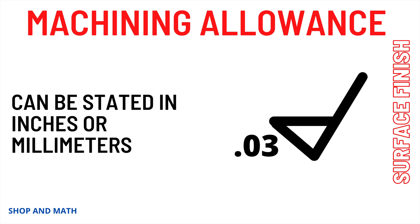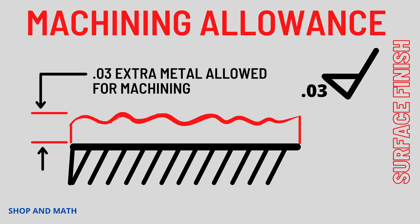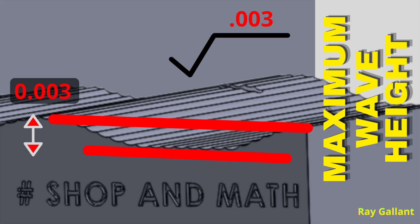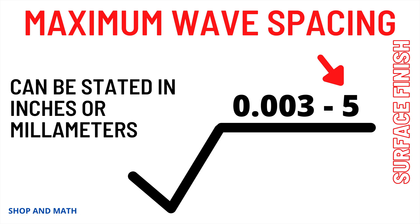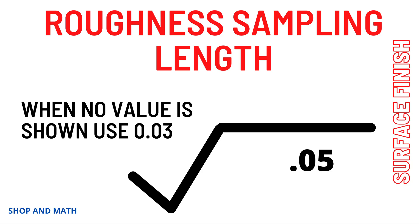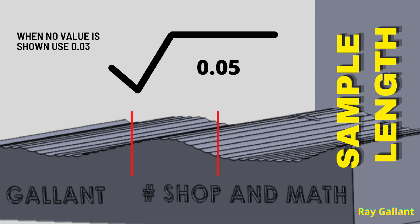Machining allowance can be stated in inches or millimeters — this means material was left on the surface to be removed, usually on castings or on material that needs a certain amount removed to prevent warpage, such as cold rolled steel. Maximum wave height can be stated in inches or millimeters — it is the height of the wave between peak and valley. Maximum wave spacing is measured in inches or millimeters and is the measurement from the wave's highest peak to the next highest peak. Roughness sampling length is the length you set your surface roughness tester to measure across; the minimum length, if not stated, will be 30 thousandths of an inch.